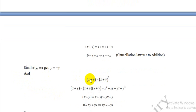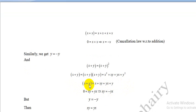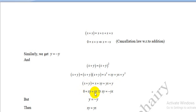Also, x + y ∈ R and R is a boolean ring, so x + y is idempotent: (x + y)² = x + y. Expanding and replacing x² by x and y² by y, then applying the cancellation law for addition (canceling x and y from both sides), we obtain 0 = xy + yx, so xy = −yx. But since y = −y, we have xy = yx.